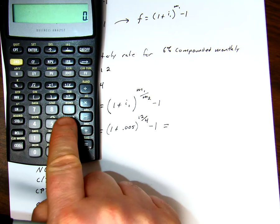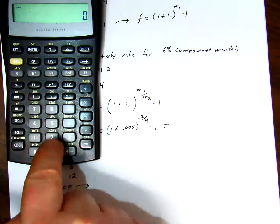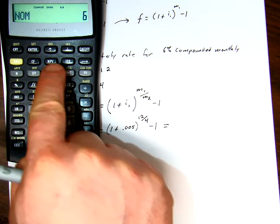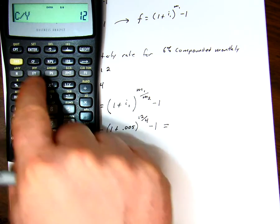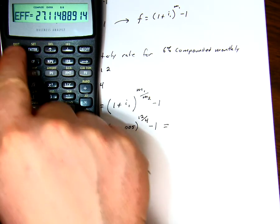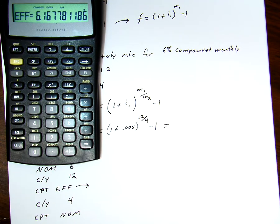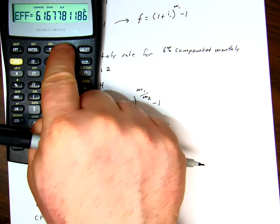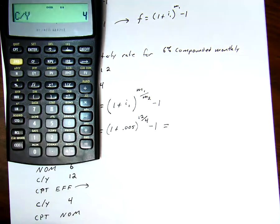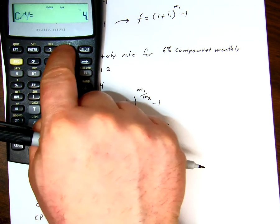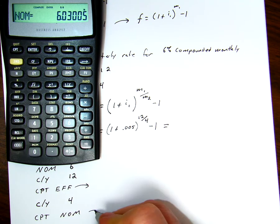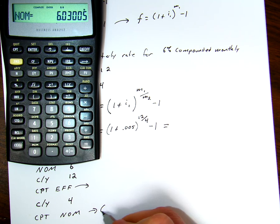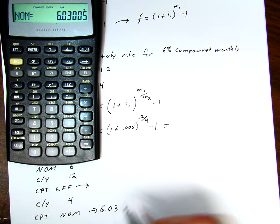So now that we've seen that in our calculator, we'll do this. We said, we have a 6, second function, iConvert. We had a 6 for a nominal rate. Our compoundings per year was 12. And we compute the effective rate to be 6.168. Now we convert our compoundings per year to be 4. And our nominal rate, we're going to compute that. And it's going to be our value of 6.03005.